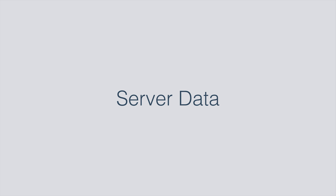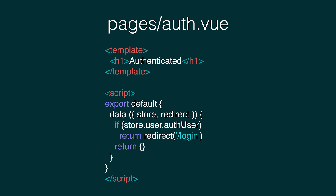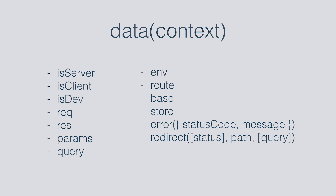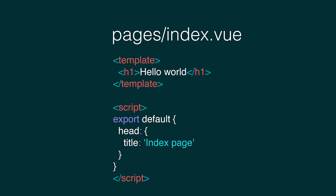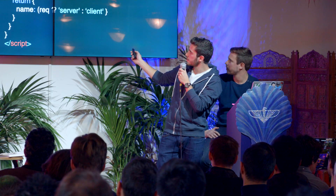Nuxt also lets you work with server data. Because we are overwriting the data method, we can work with async data but also with data from the server. We receive a context as the first argument, and in this context there are a lot of variables you can use. Here I'm using req, which is only available from the server side — it's the req request object you have with Node.js. I'm just checking if req exists: if so, I set the variable to 'server'; otherwise, I set it to 'client'. So when loading the page the first time it will be server-rendered and display 'Hi from server', and if I navigate through the app and come back to this page it will be loaded from the client and display 'Hi from client'.